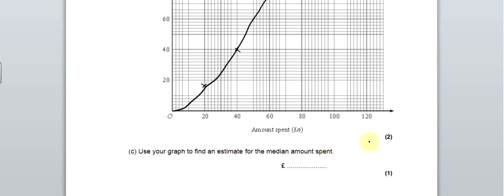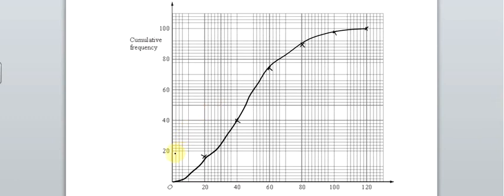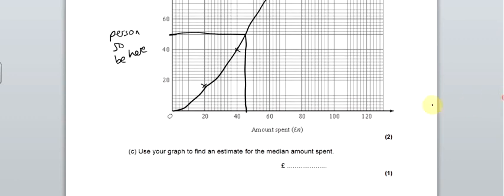And now we're going to find an estimate for the median amount. Well, very straightforward. There was 100 people. So person, middle person is person 50. Person 50 be here. And we go across. Using a ruler, of course. And then we zoom down there. It was an amazingly straight line. And we try and read that off. And be very careful with your scales.